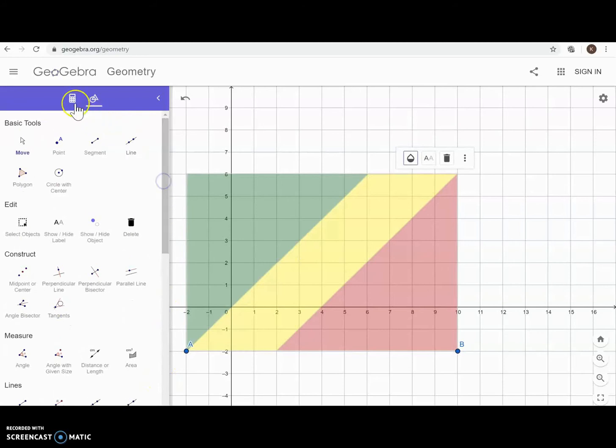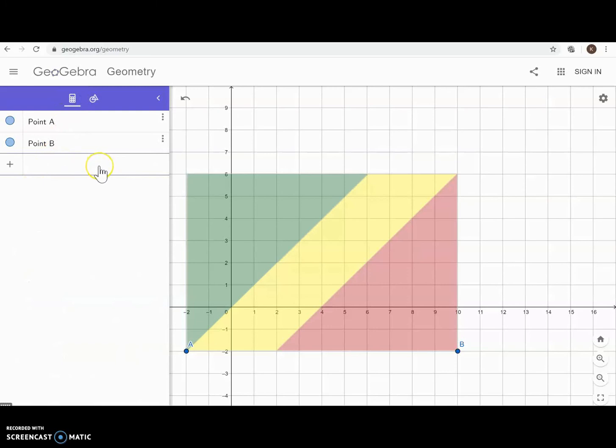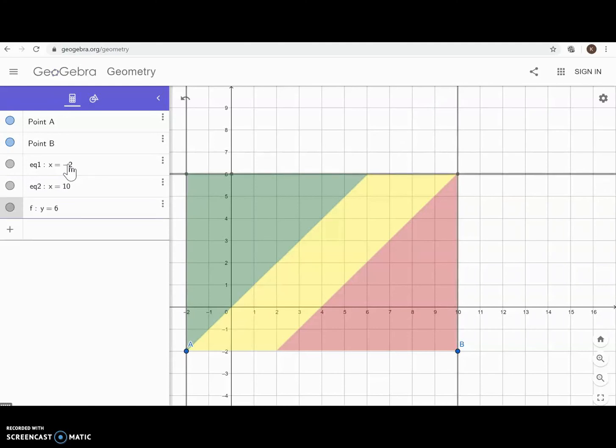We also have up here what looks like a calculator. If we click that, it's also going to give us opportunities to put in equations. So students can write the equations that will create this flag, such as x equals negative 2. That creates the left boundary of our flag. Our right boundary would be x equals 10, upper boundary y equals 6 and our lower boundary y equals negative 2.